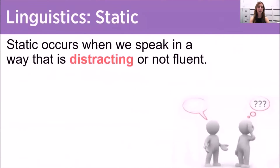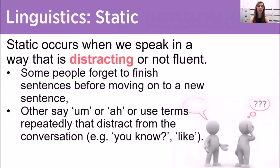Looking at static with language, static occurs when we speak in a way that is distracting or not fluent. Some people forget to finish sentences before moving on to a new sentence. Others say 'um' or 'are' quite a lot, or they use terms repeatedly that distract from the conversation — for example, terms like 'you know' and 'like'.